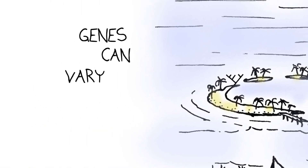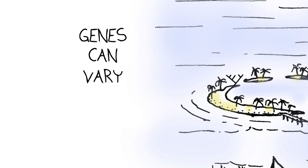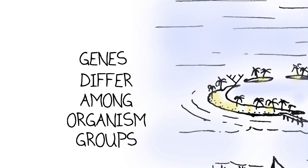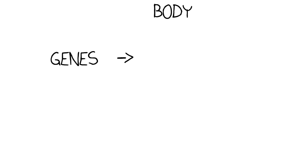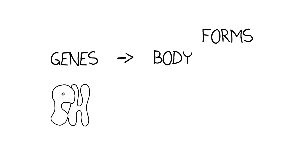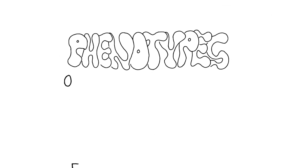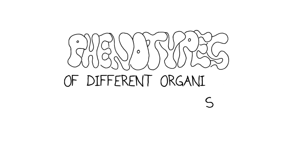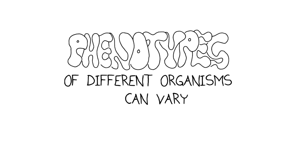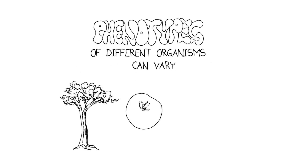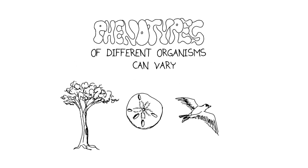We've seen that genes can vary. Most clearly, they differ among the major groups of organisms. That's evident because genes lead to body forms, or phenotypes, and phenotypes of these different organisms can vary — everything from a tree to a sand dollar and beyond.